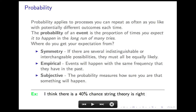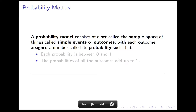The important thing is that each of these ideas — symmetry, empirical, and subjective — are models. You make the assumption that things are interchangeable; that may or may not be true in practice. You make the assumption that things will continue as they have in the past; that may or may not be true in practice. When you're using these principles, you should be aware that there's an assumption that may be partially true, untrue, or completely true.